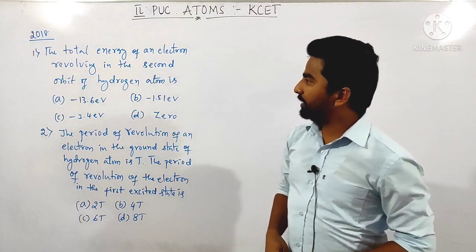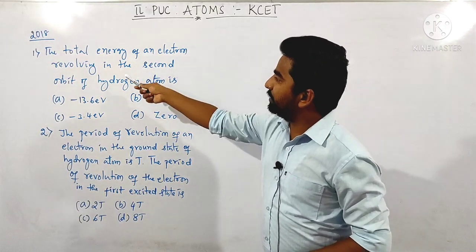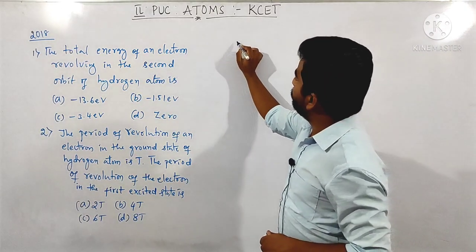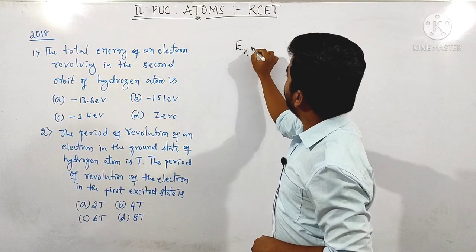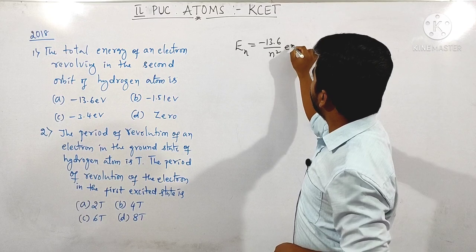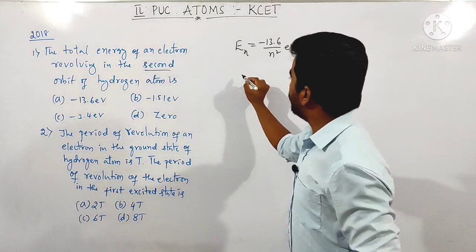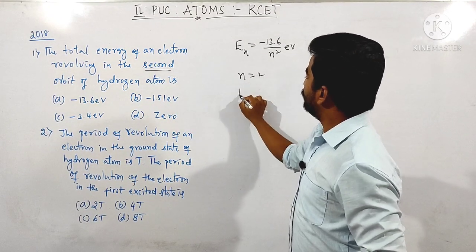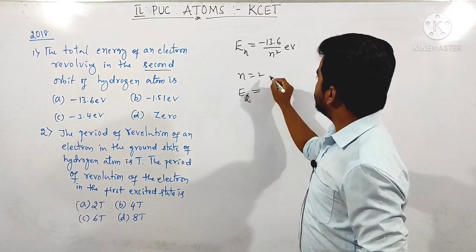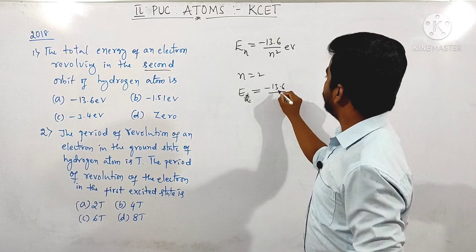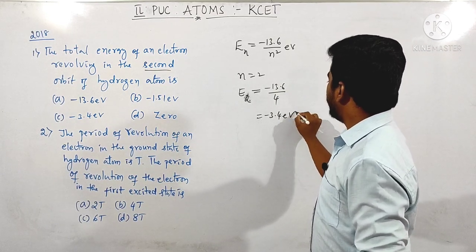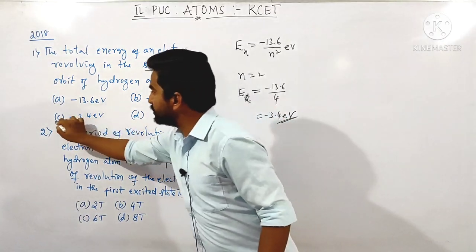Next question asked in 2018: the total energy of an electron revolving in the second orbit of hydrogen atom is? The energy of the nth orbit of hydrogen atom is −13.6/n² eV. For the second orbit, n = 2, so energy = −13.6/4 = −3.4 electron volt. The answer for the question is option C.